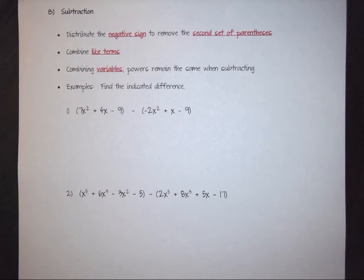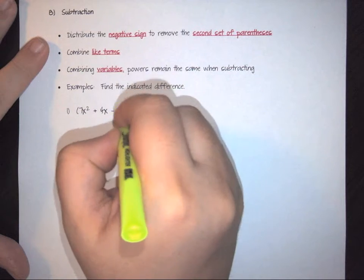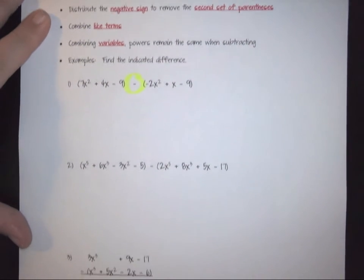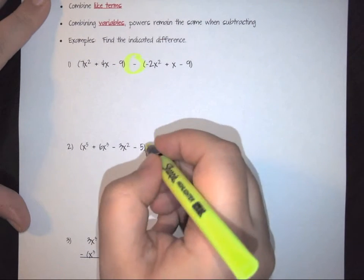However, when we're talking about subtraction, we have to keep in mind that subtraction is very similar to a negative sign. And so here, if we look at our problems, notice I have three problems here. And we've got this negative sign between our polynomials. Notice here it is again. And then lastly, here it is down here.